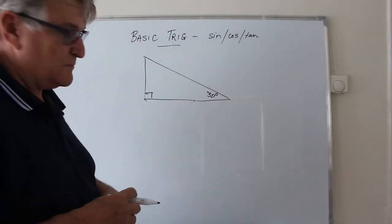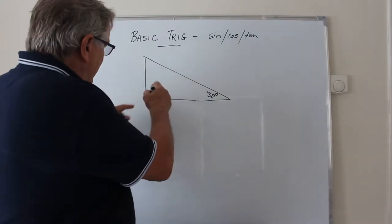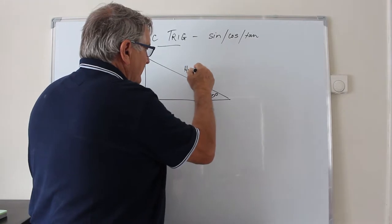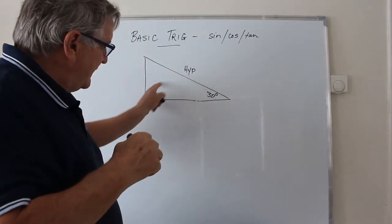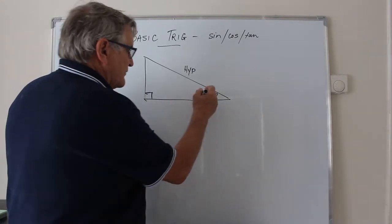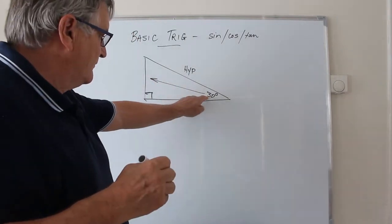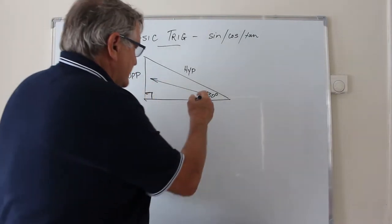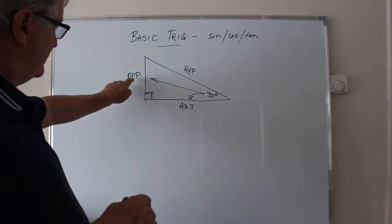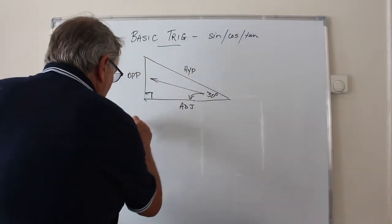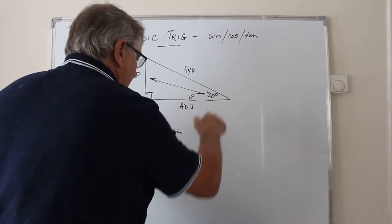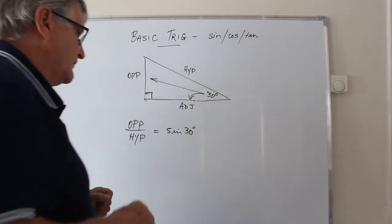Here's our right triangle. The side opposite the right angle is the longest side and it's called the hypotenuse — just think of it as the longest side. The side opposite the angle is called the opposite side, and the side beside the angle we call the adjacent side. The ratio of opposite over hypotenuse is called the sine of this angle — in this case, the sine of 30 degrees.